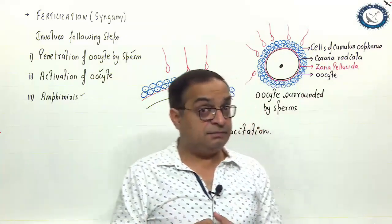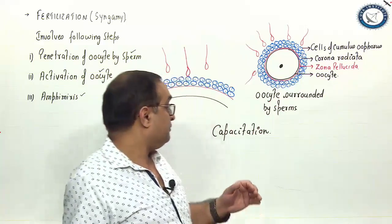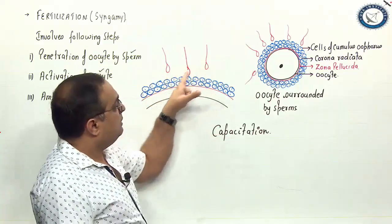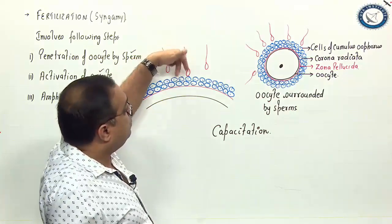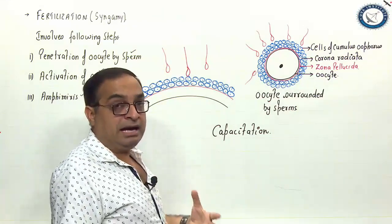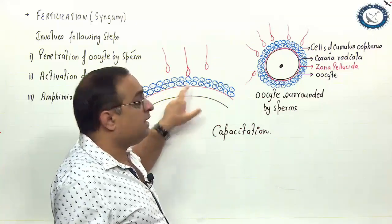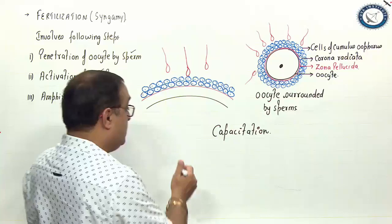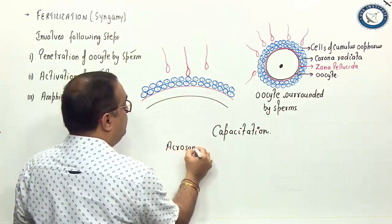Let us understand the first step, that is penetration of oocyte by the sperm. This diagram shows that the sperms have reached near the oocyte. They try to penetrate through these layers by drilling action. They drill through this layer and when the sperm makes contact with the zona pellucida then what happens is acrosome reaction.